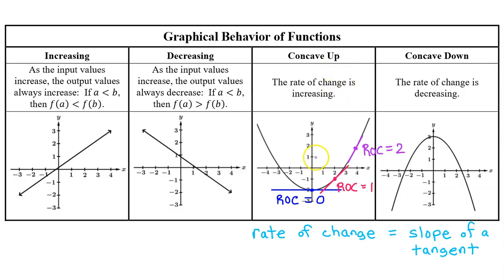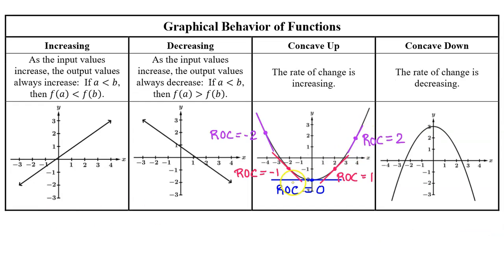Memorize this now: when a function is concave up, the rate of change is increasing. This pattern holds even when including negative rates of change. At x = negative 2 the rate of change is about negative 1, and at x = negative 4 it's about negative 2. Reading left to right, the rate of change goes from negative 2 to negative 1 to 0 to 1 to 2 — all increasing, since negative 2 is smallest and 2 is largest.